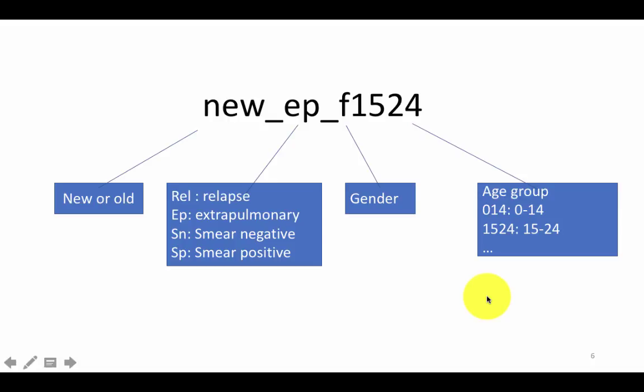So that's really what this column means. It might be a good idea — because we would want to presumably perform analysis by each of these categories separately — to pry them apart, since putting all of the names together in one field is kind of misleading. So if you have new_EP_F1524, you actually want to separate that into four different columns: new, EP, F, and 1524 as the age range. That way you will then be able to group by each of these and perform more detailed analysis.